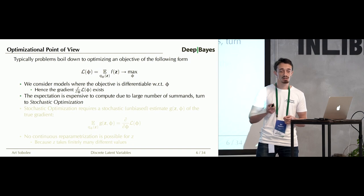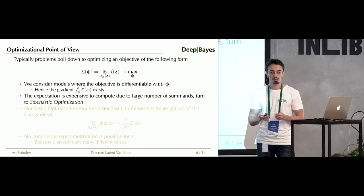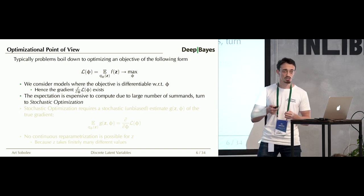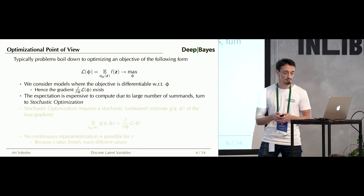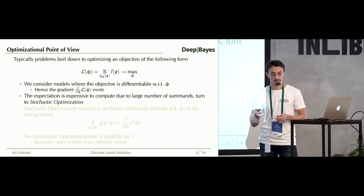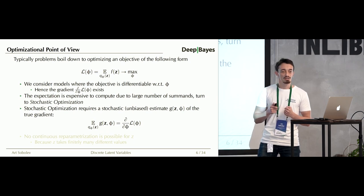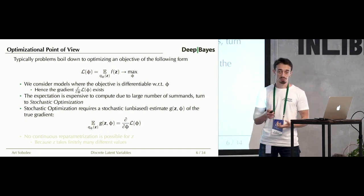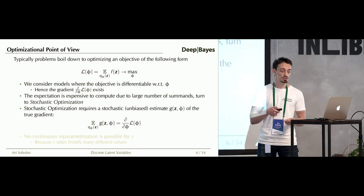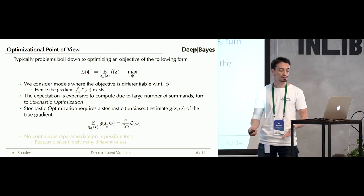In practice, in most interesting scenarios we are unable to compute this expectation analytically because it involves an exponential number of terms that we cannot enumerate efficiently. So instead we opt for stochastic optimization, which only requires an unbiased estimate of the gradient. We seek to construct a function g that, when averaged over randomness — say random variable Z — recovers the true gradient.